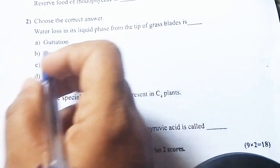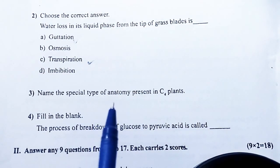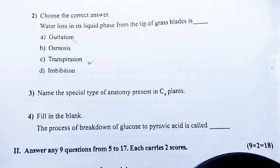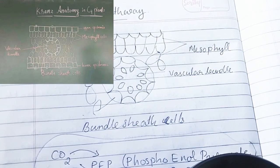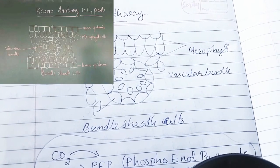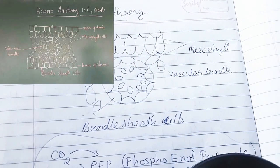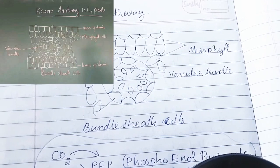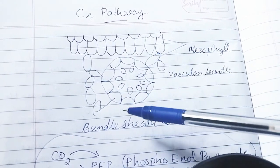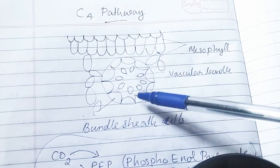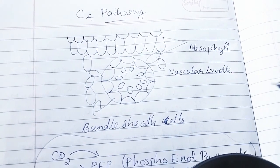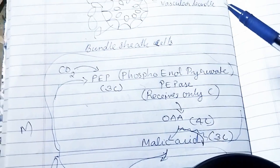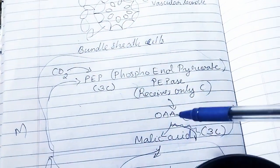Name the special type of anatomy present in C4 plants. The answer is Kranz anatomy. Kranz anatomy can be found in a small part of the C4 pathway, which involves a special type of cells.